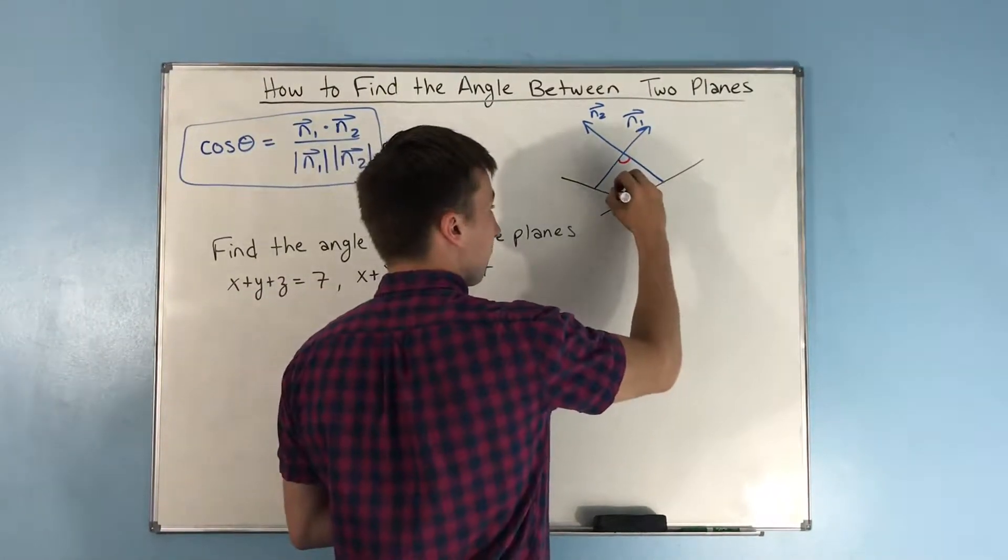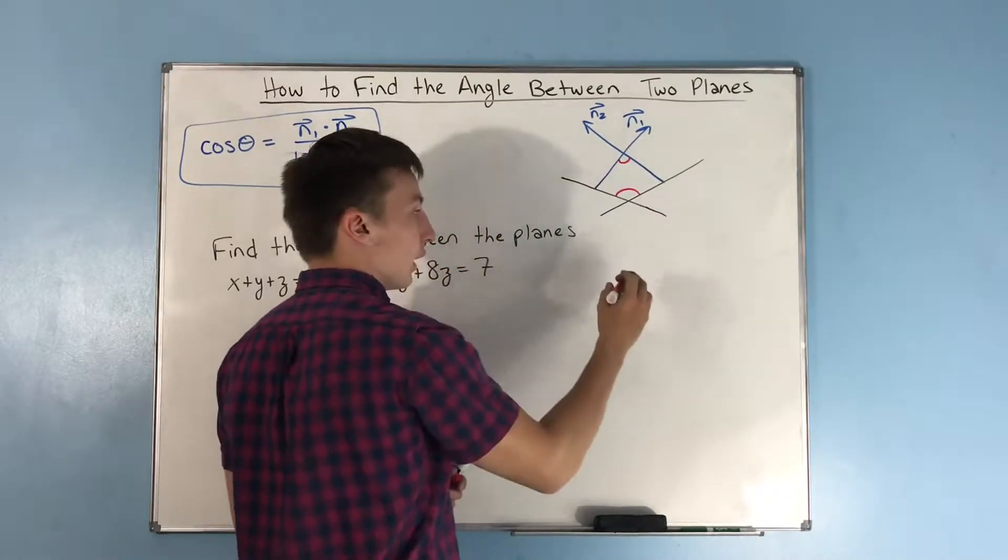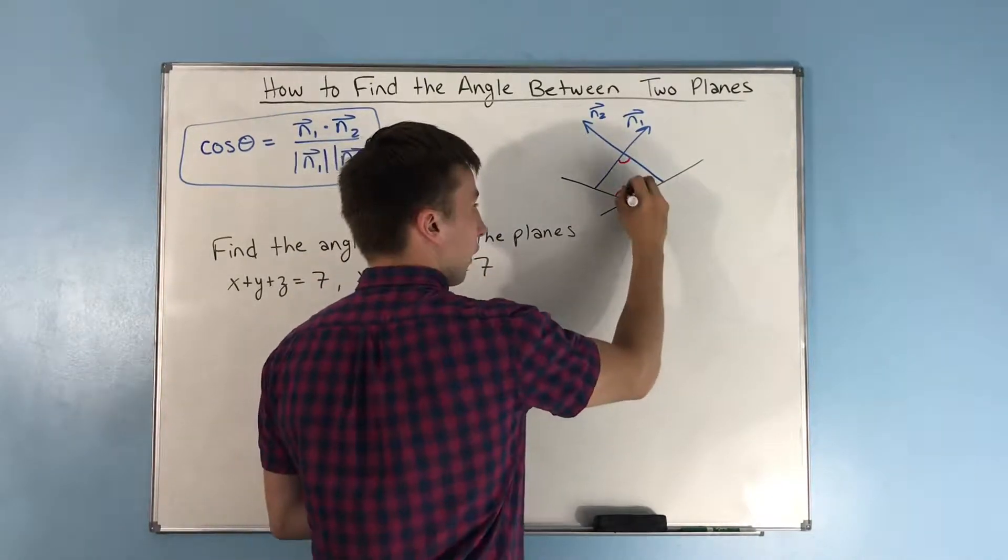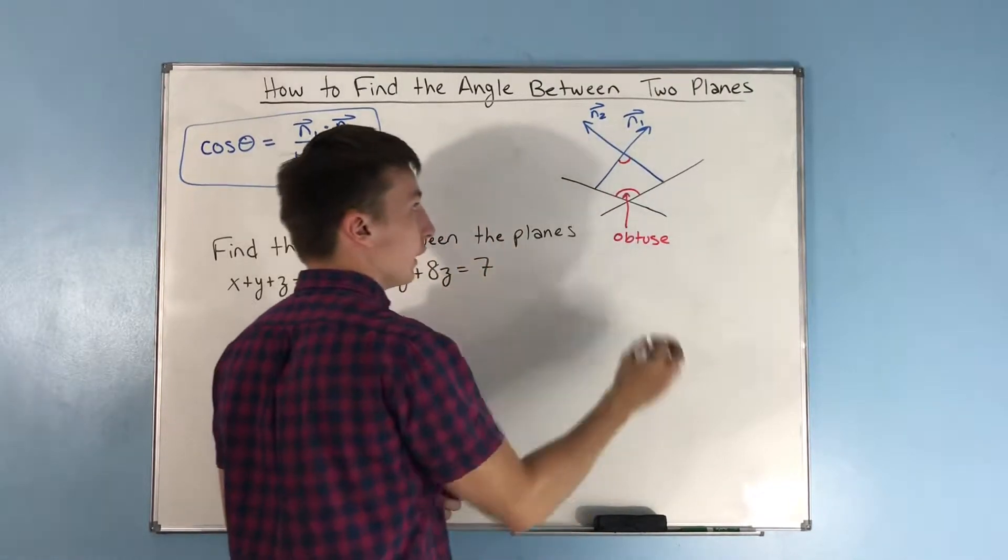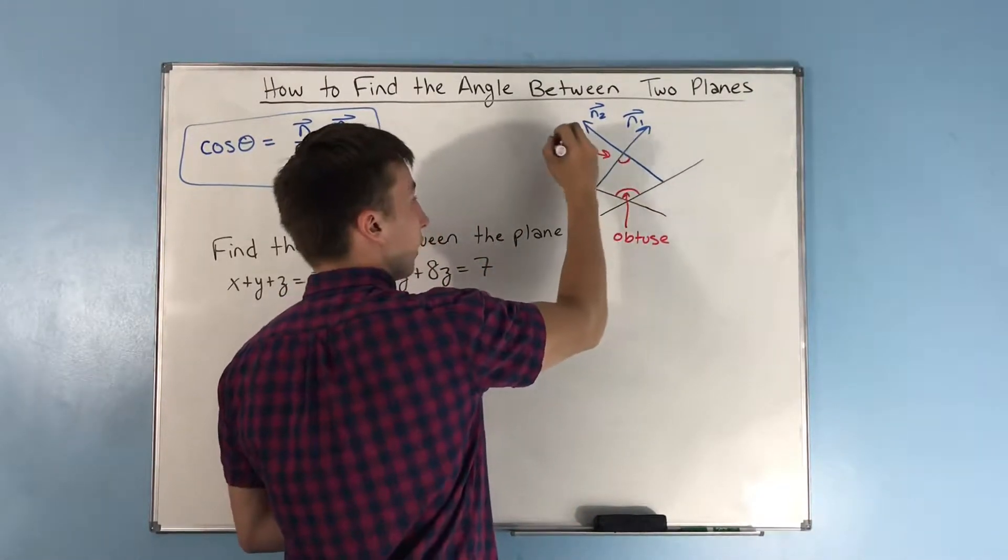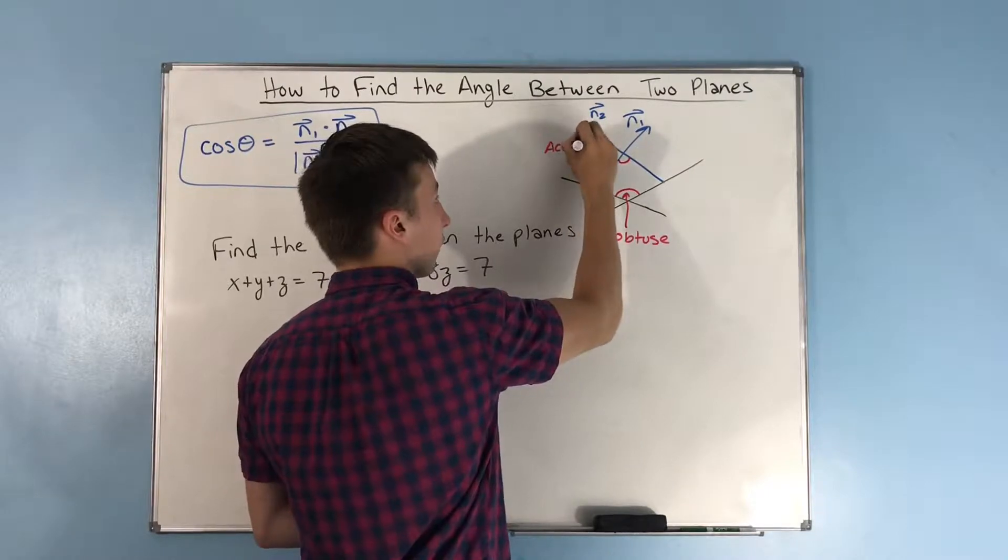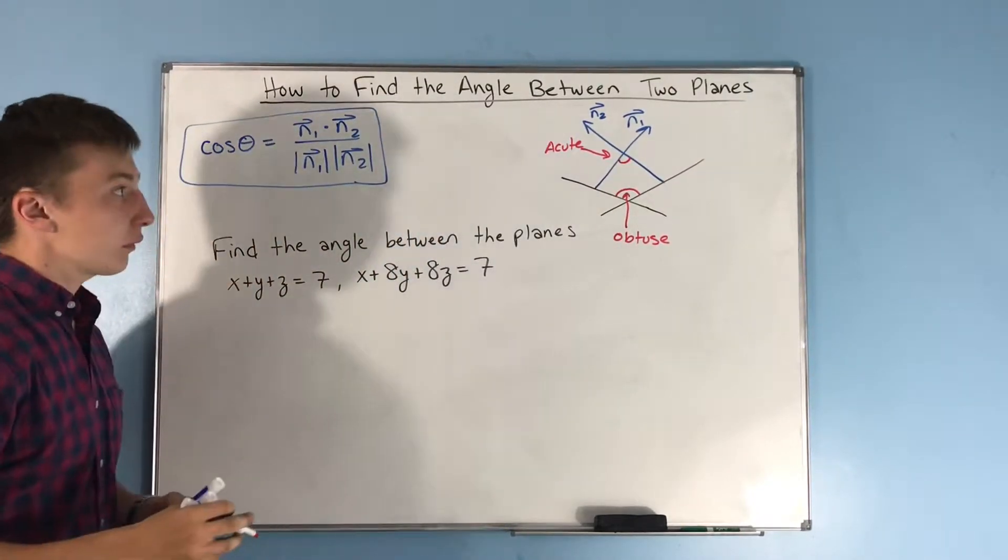And these two things are equal. I hope you can tell from the drawing, but this angle right here, that is obtuse. That's definitely greater than 90 degrees, and this angle right here is definitely acute.